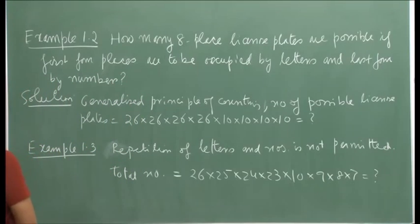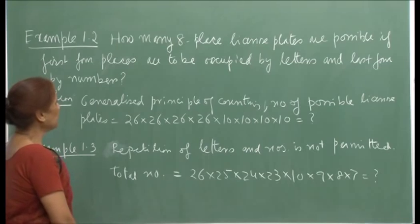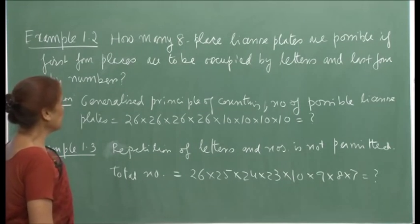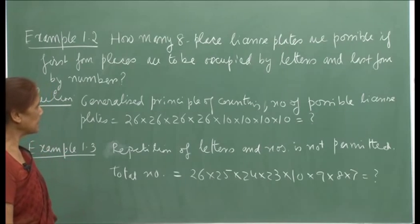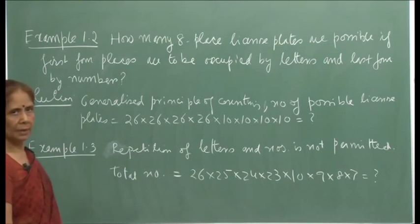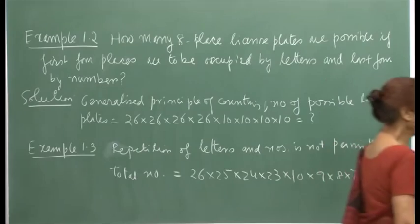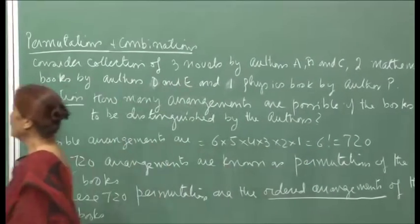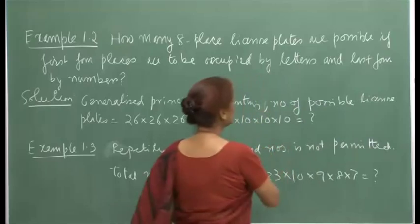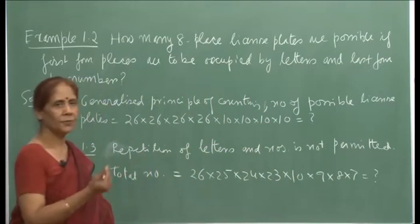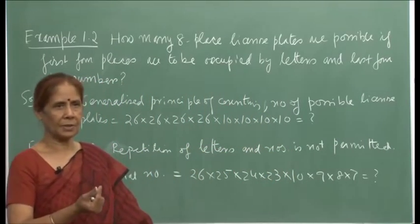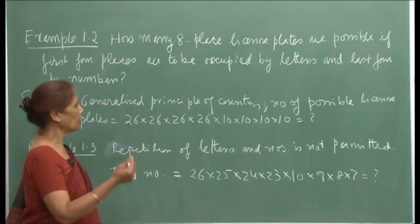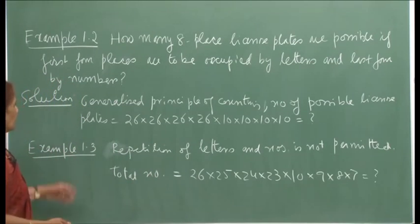Let us look at example 1.2: how many 8-place license plates are possible if the first 4 places are to be occupied by letters and the last 4 by numbers? The first 4 can be any of the 26 alphabets, and for the last 4, there can be any of the digits 0 through 9.